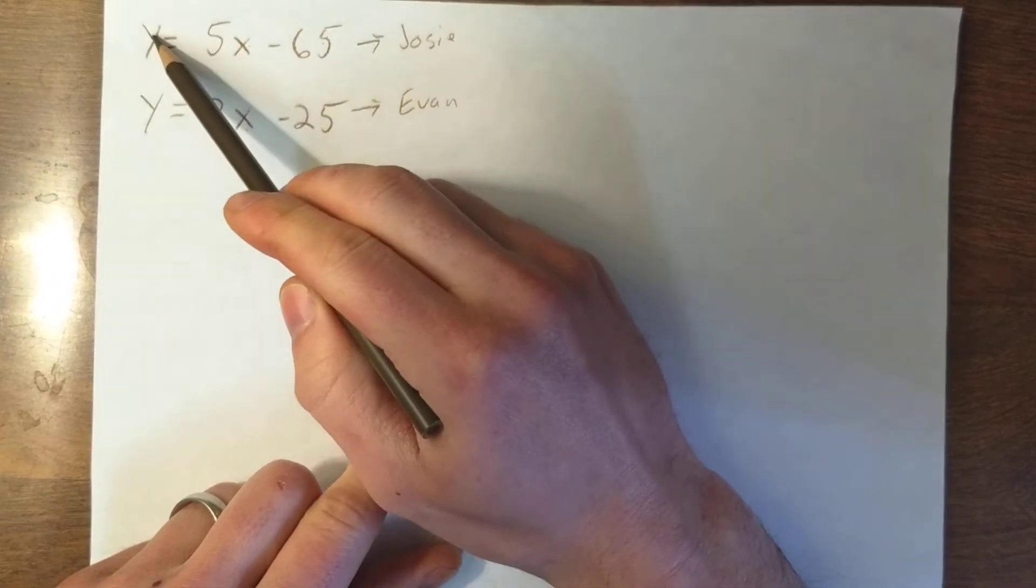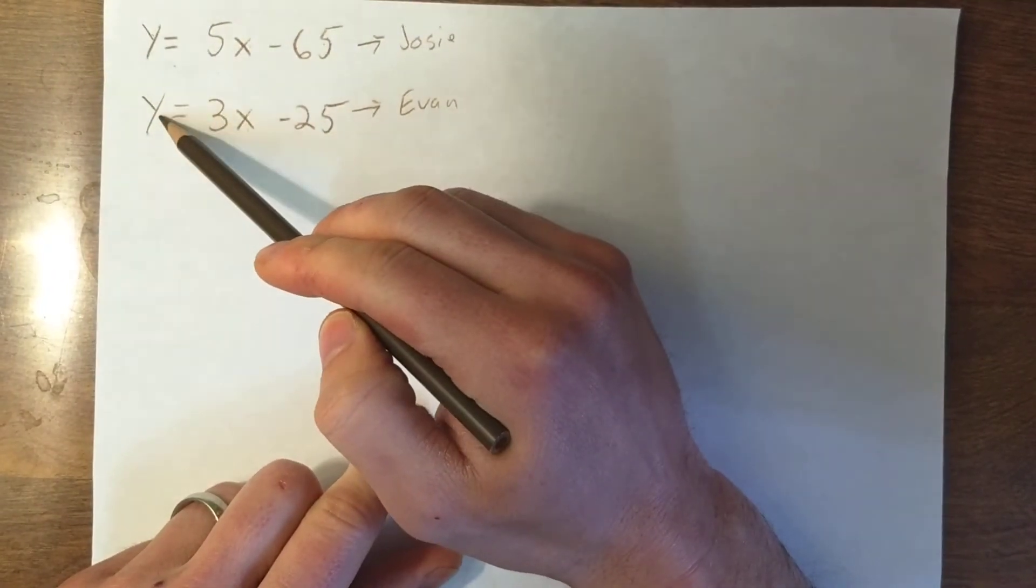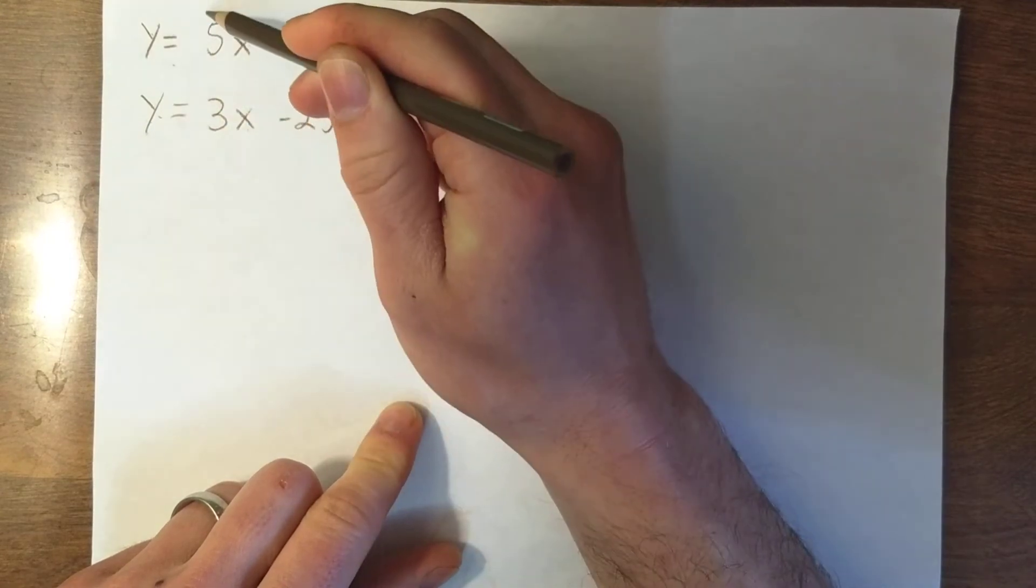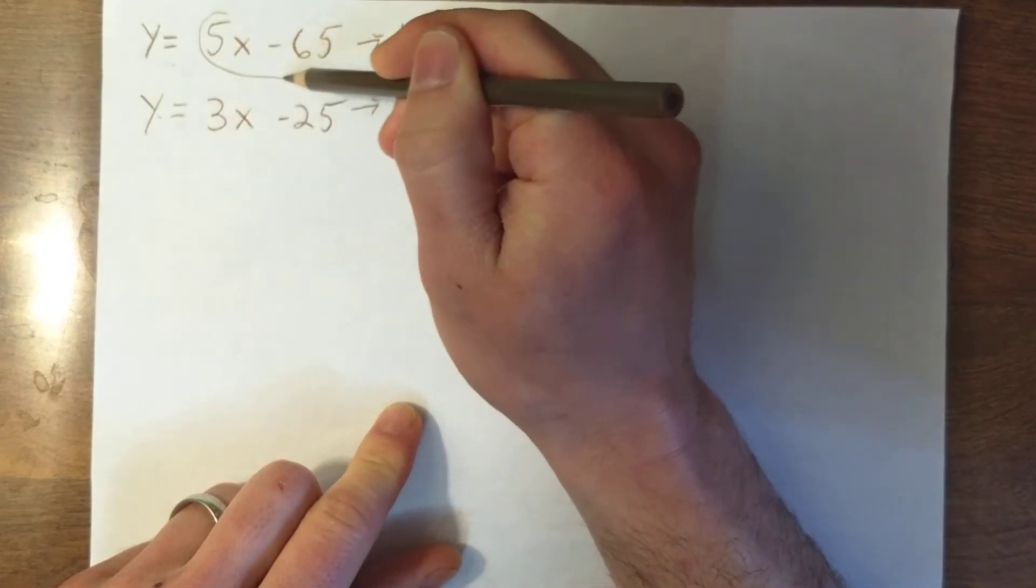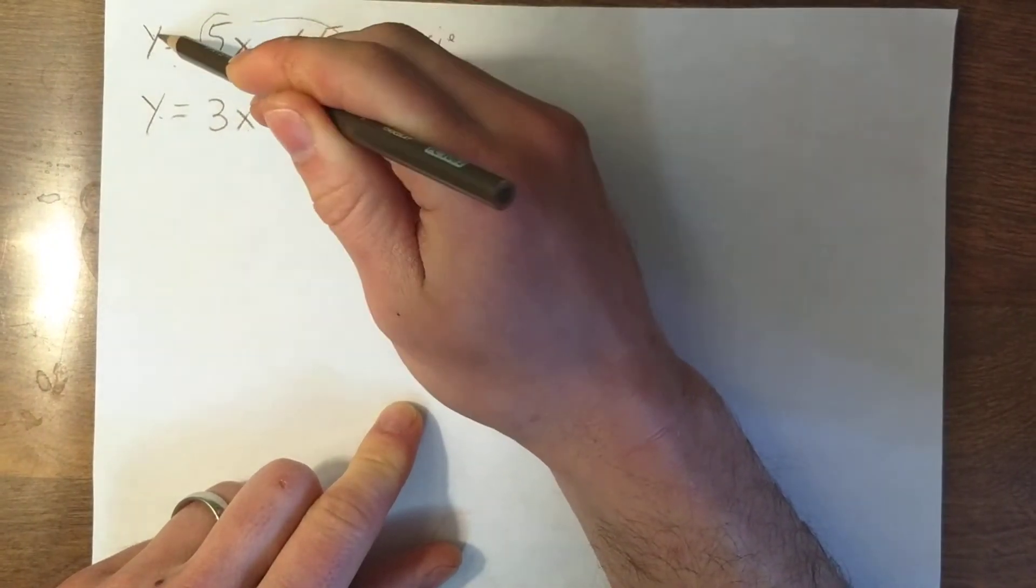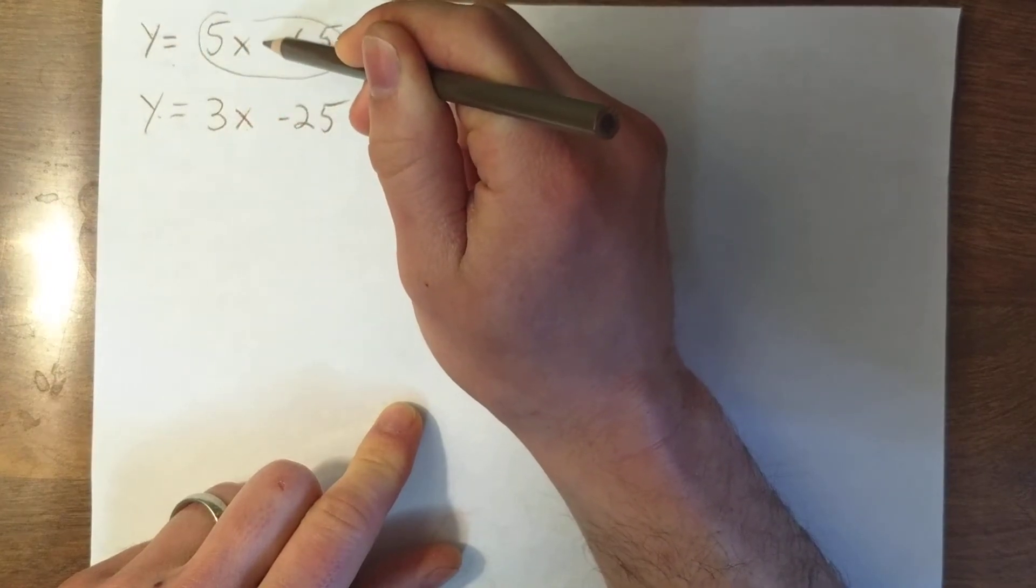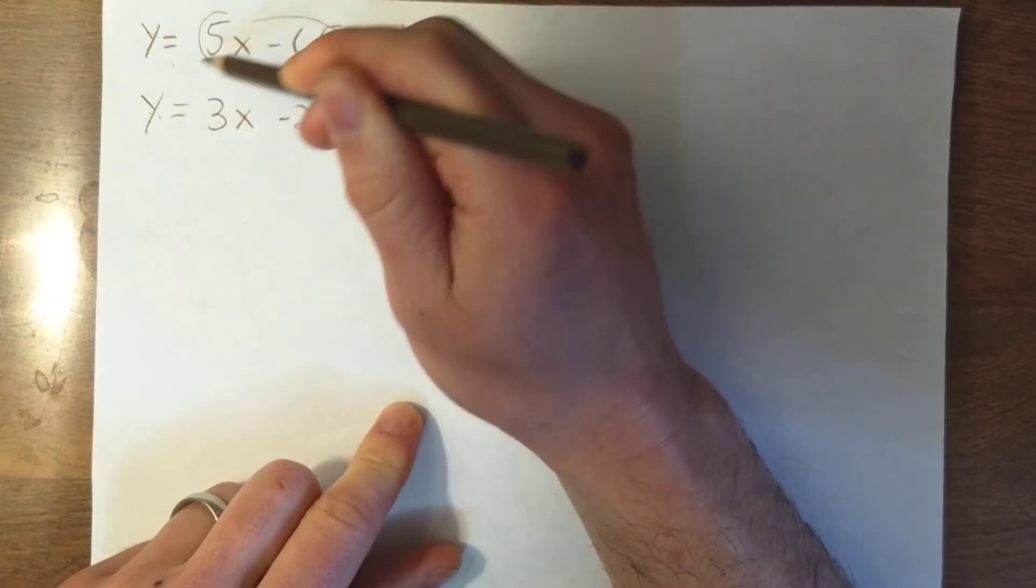Well, because this y is equivalent to this y, I can then substitute this. This is what equals this y. I can substitute this in for this y. So this is why we call it substitution.